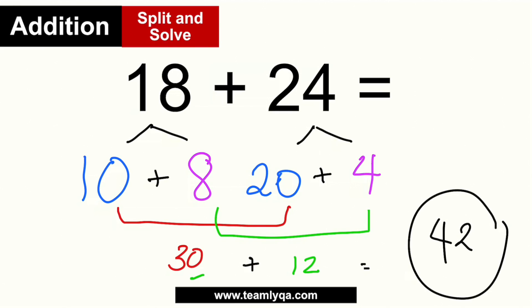Now that you know how to use Split and Solve, I'll give you a new equation to try. The first step is to separate the ones digit from the tens digits for each addend, put all the tens together and ones together, add those two results, and you'll get the final answer. If you're ready, it's your turn to solve.